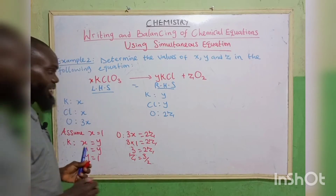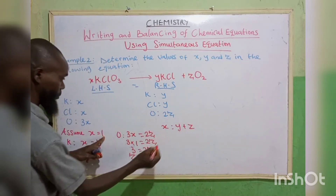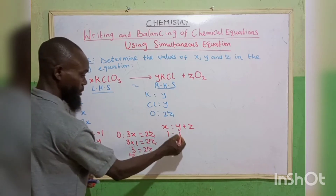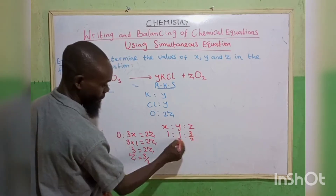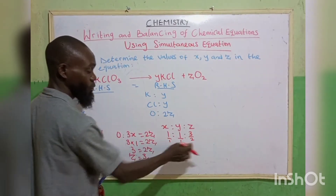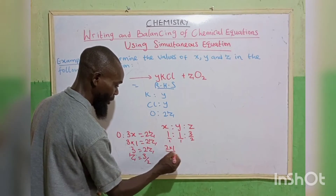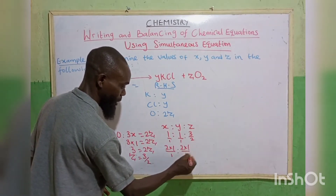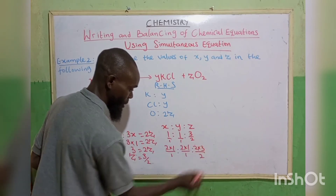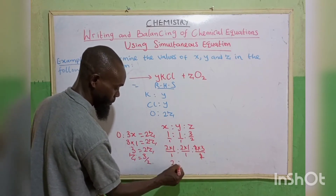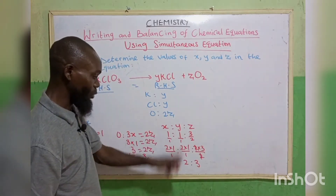We find the ratio x : y : z. Our x is 1, y is 1, z is 3/2. Writing these over 1, the LCM is 2, so we multiply through by 2. 2 times 1 over 1 gives 2; 2 times 1 over 1 gives 2; 2 times 3/2 — the 2s cancel — gives 3. So x is 2, y is 2, z is 3.